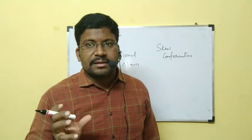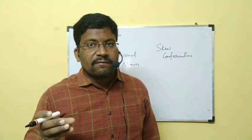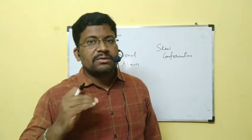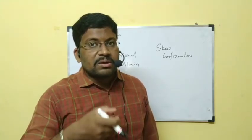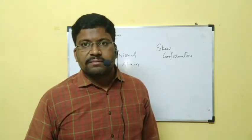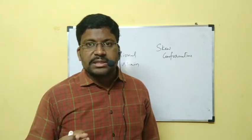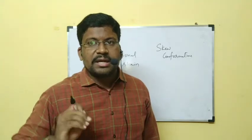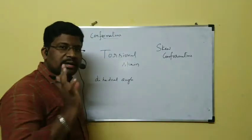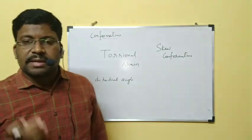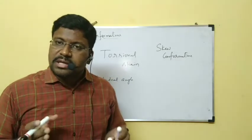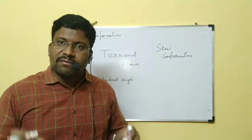The energy barrier between staggered and eclipsed form is 20 kilojoules per mole. When staggered form crosses that energy barrier — gains 20 kilojoules per mole — only then will it convert to eclipsed form. When eclipsed form loses 20 kilojoules per mole, it converts back to staggered form. Key terms: dihedral angle, torsional strain, skew conformations. These are the terms useful in conformations of ethane.